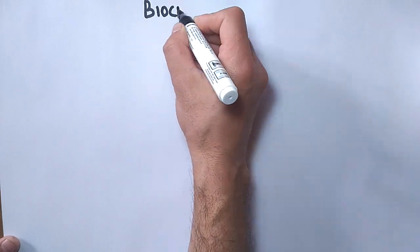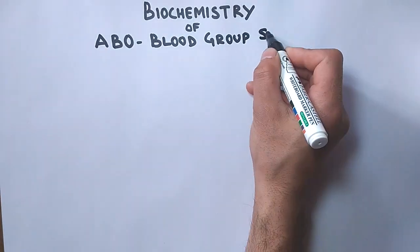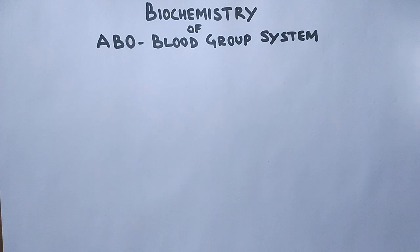Now in this video we will be discussing the biochemistry of ABO blood group system where we will be discussing the formation of different antigens on the surface of erythrocytes.